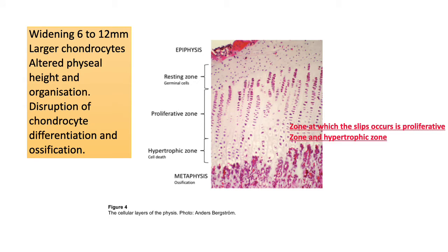In histology, you see the resting zone of the chondrocytes, then they proliferate in columns, then they become hypertrophied — you can see the paired chondrocytes — and finally there is a zone of ossification. The separation or slip occurs at the junction of the proliferative and hypertrophic zone. There is widening of the growth plate from 6 to 12 millimeters, the chondrocytes are large, there is altered physeal height and organization, and disruption of chondrocyte differentiation and ossification.